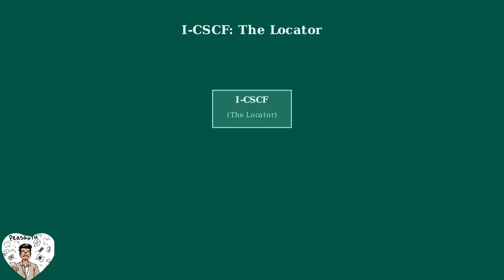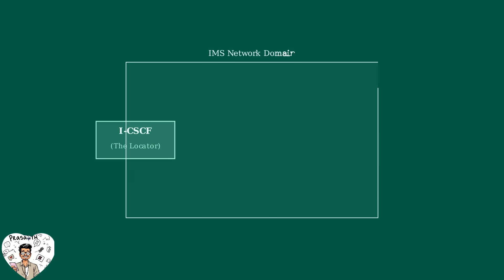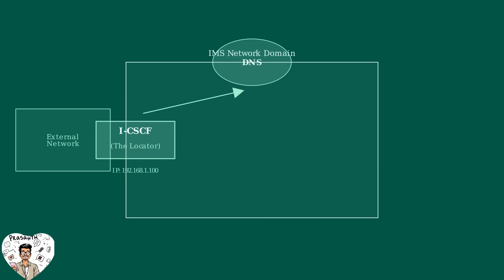Now we meet the ICSCF, or Interrogating Call Session Control Function. Think of the ICSCF as your friendly directory assistance operator — it helps locate exactly where you need to go in the IMS network. The ICSCF sits strategically at the edge of the IMS network domain. This positioning is crucial because it acts as the entry point for incoming calls and requests from other networks. Its IP address is published in the DNS of the domain, allowing other servers to easily find it and forward SIP packets to the correct location.